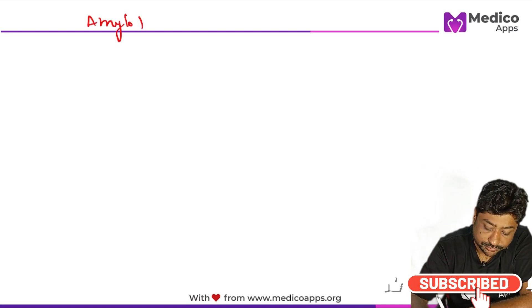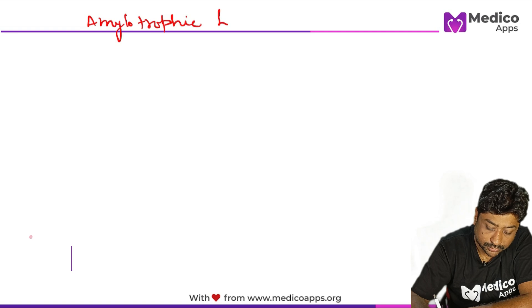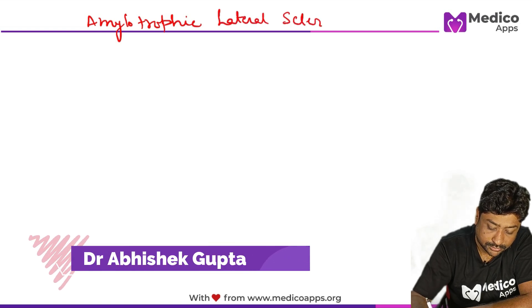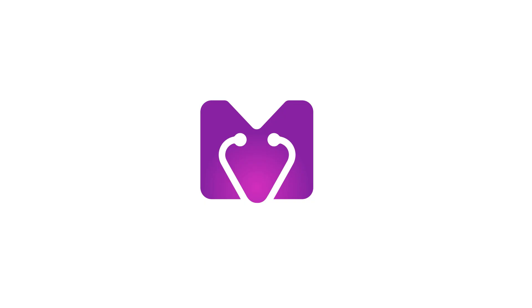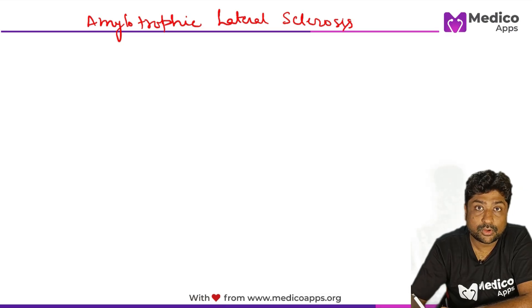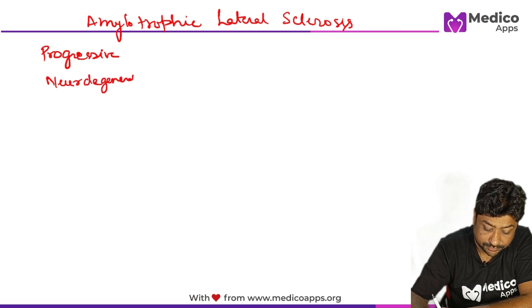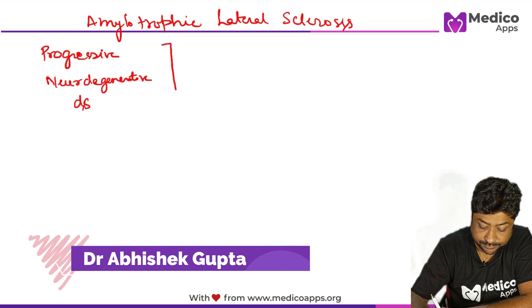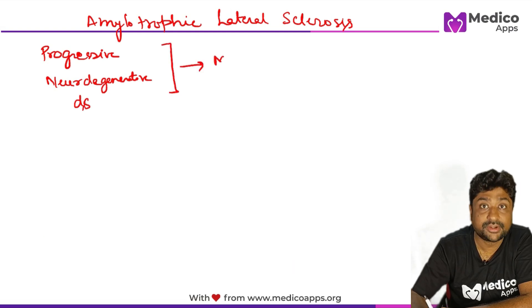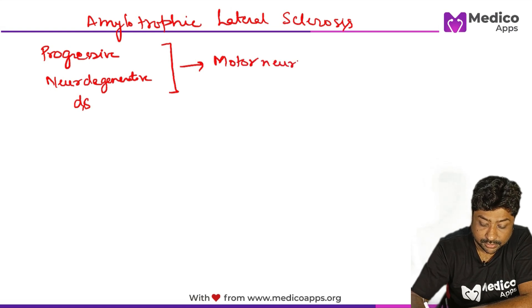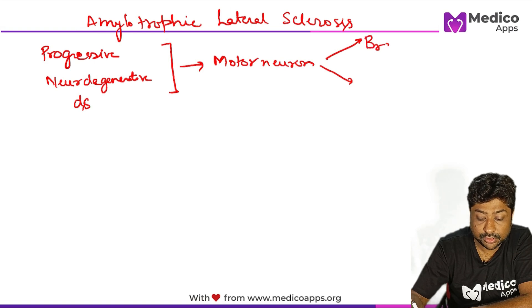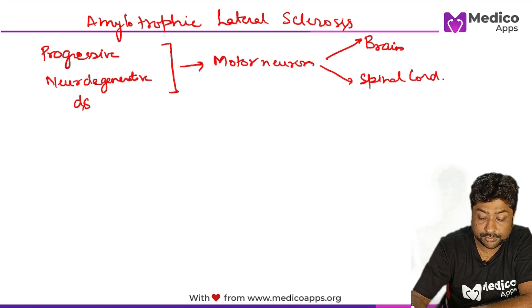In this high-yield topic video, we are going to learn about amyotrophic lateral sclerosis. ALS is basically a progressive neurodegenerative disease, and this progressive neurodegenerative disease only affects motor neurons — both in the brain as well as in the spinal cord.